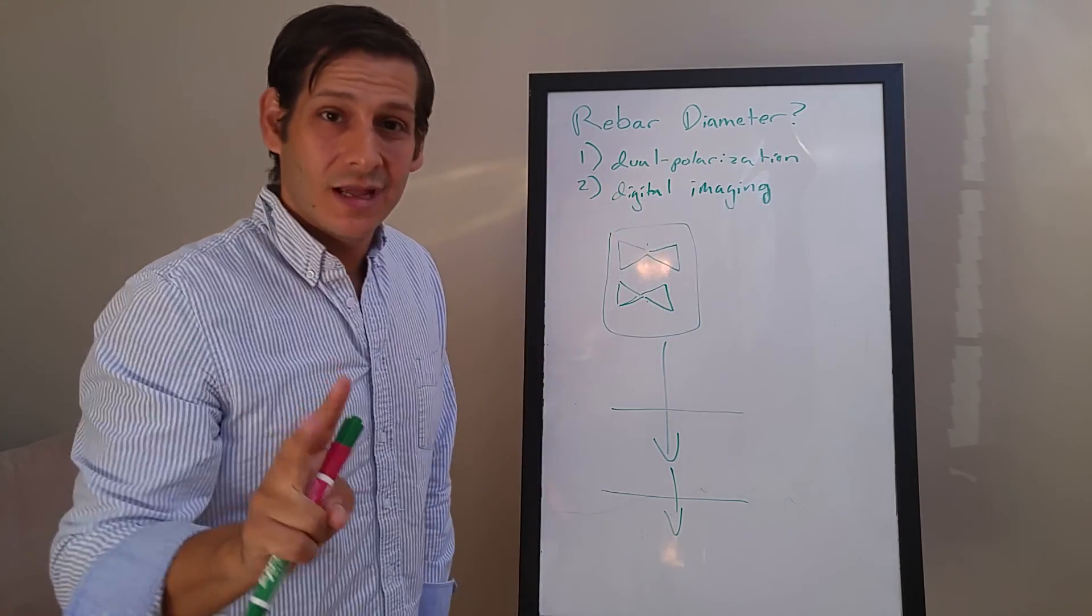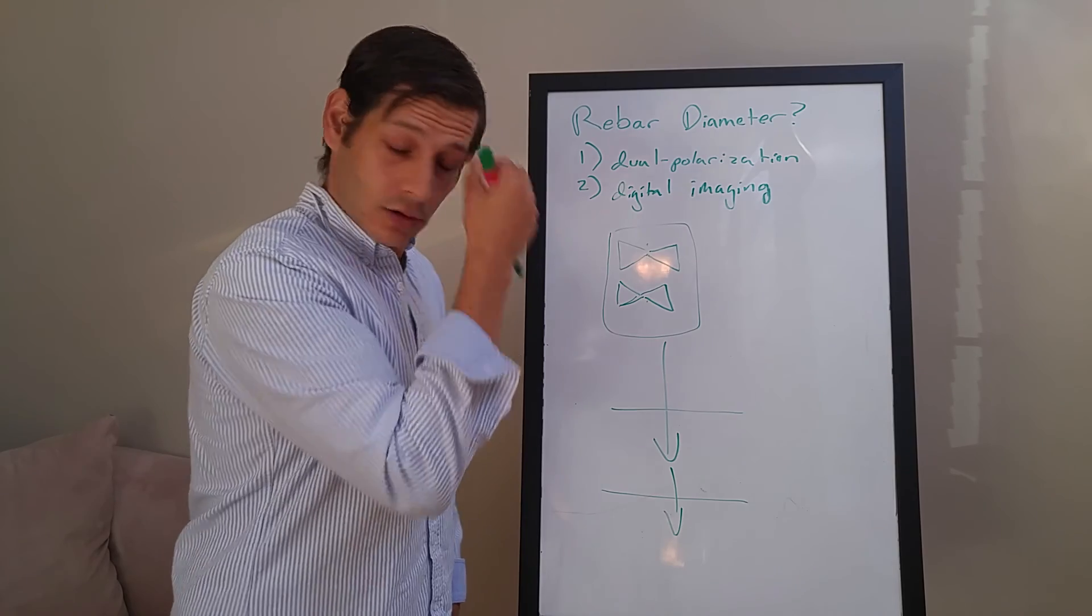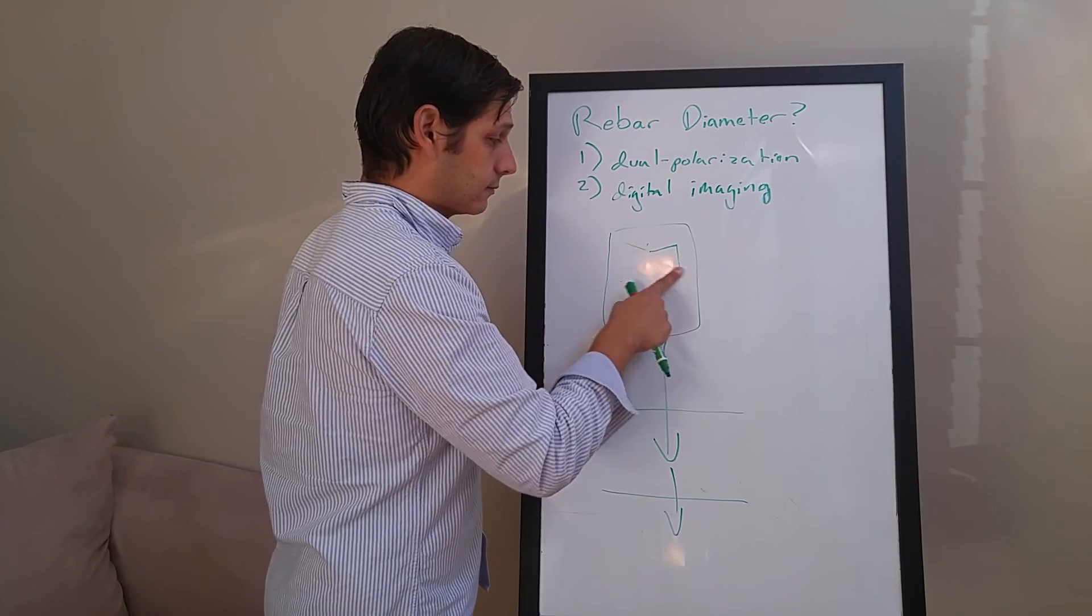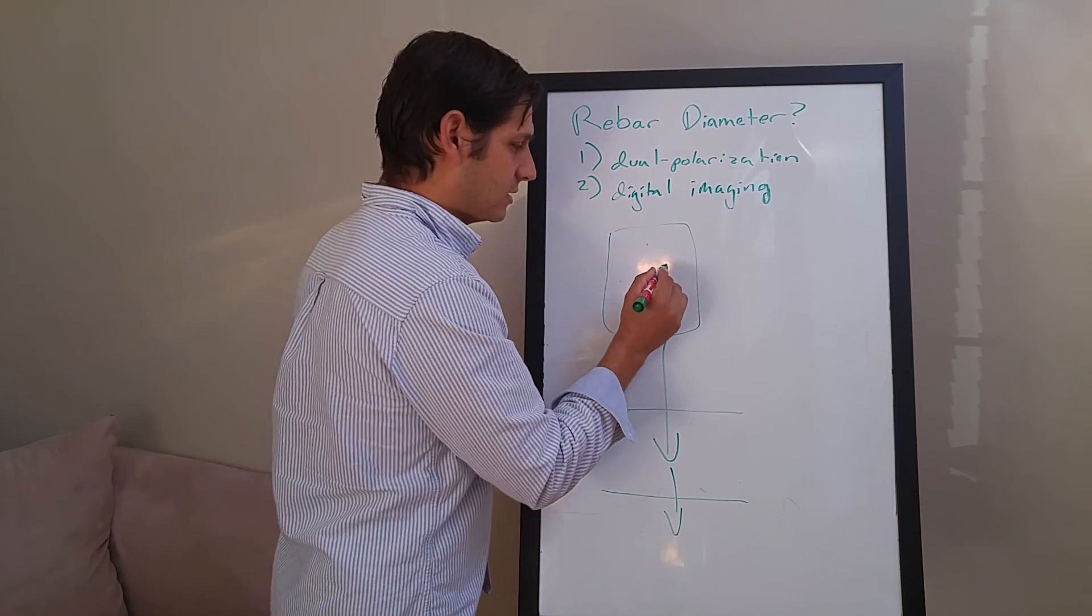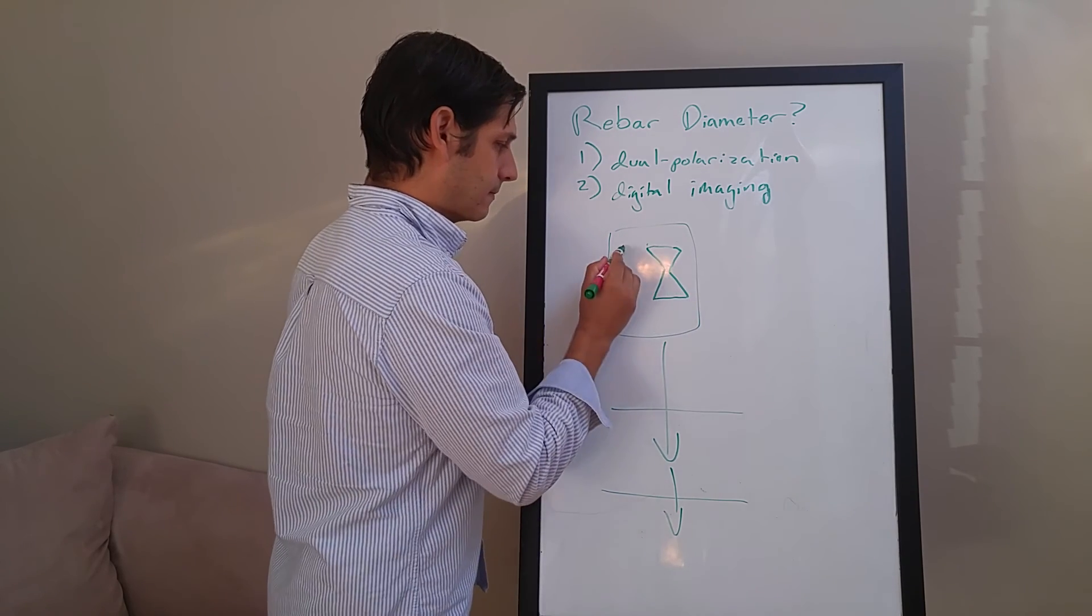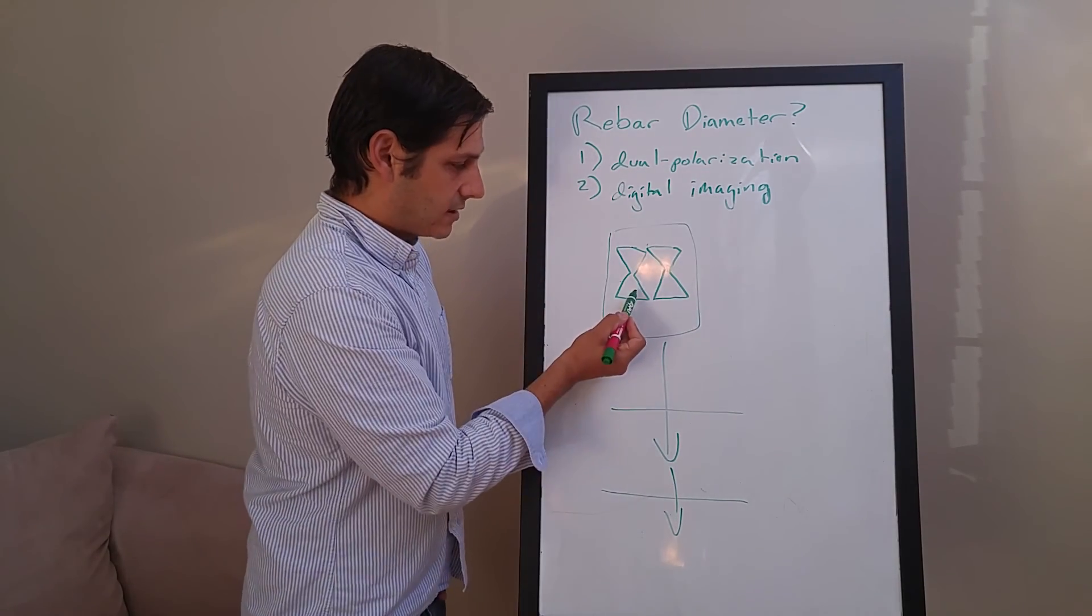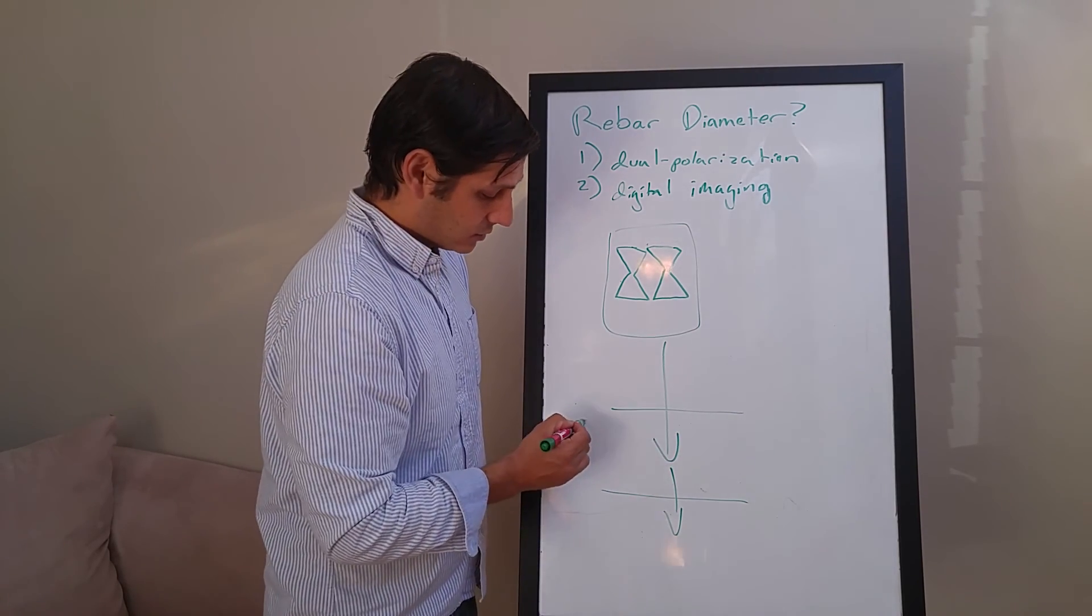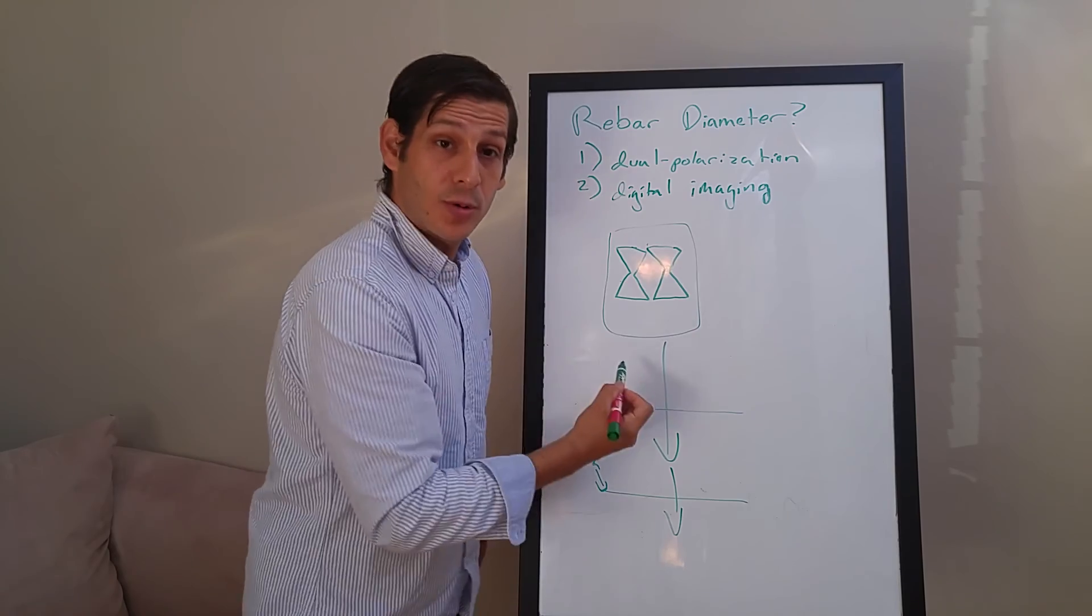For dual polarization, there's a second way that you can orient your antenna to record a signal, and that way is called cross-polarization. Instead, your bow ties are going this way - basically you flip it 90 degrees. And as you put them across, both cross over the rebar at the same time. So this is called cross-polarization.